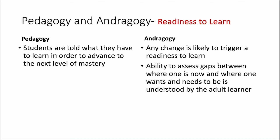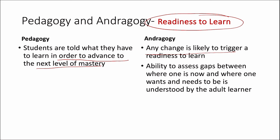When it comes to the readiness to learn: pedagogy students are told what they have to learn in order to advance to the next level of mastery. Whereas in andragogy, any change is likely to trigger a readiness to learn. The adult learner understands the gaps between where one is now and where one wants and needs to be. The next level of mastery will be decided by the instructor in pedagogy.